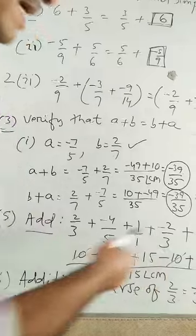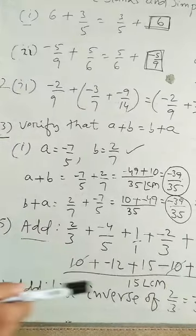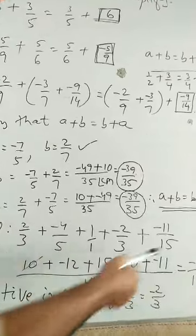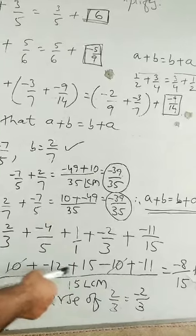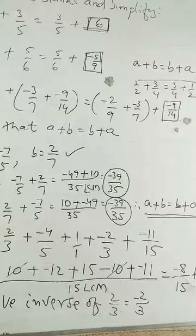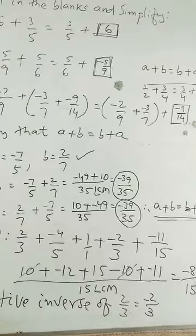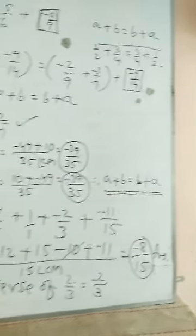Now, plus 10 and minus 10 cancels out. Now, the remaining integers are minus 12, plus 15, minus 11 by 15. On simplifying, minus 12 plus 15 is 3, 3 minus 11 is minus 8. The denominator is here, 15. So, minus 8 by 15 is the answer.